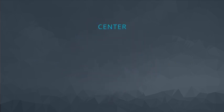These are our three potential measures of center: the mean, or the average; the median, or the middle value; and the mode, or the most frequent value.